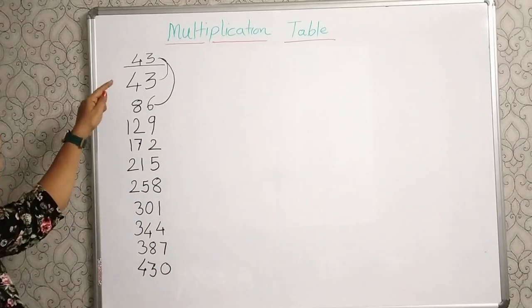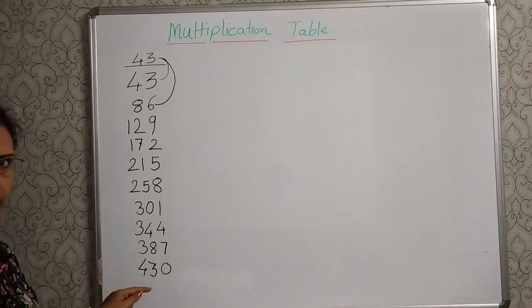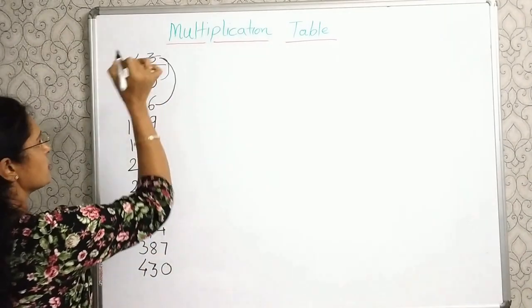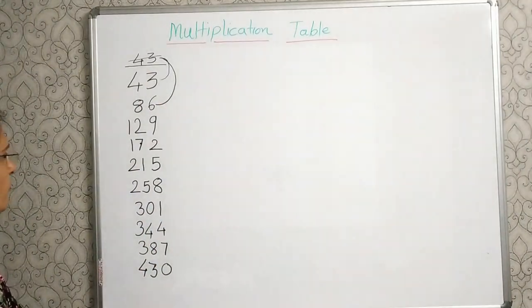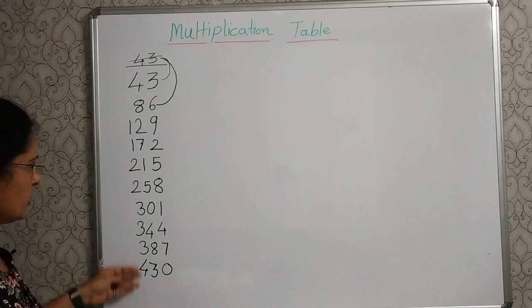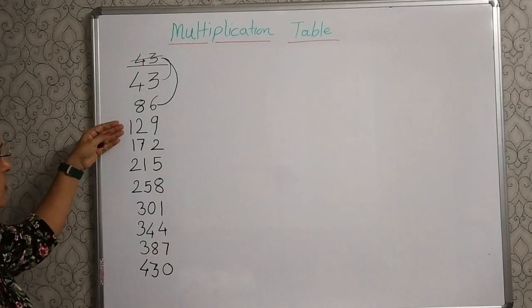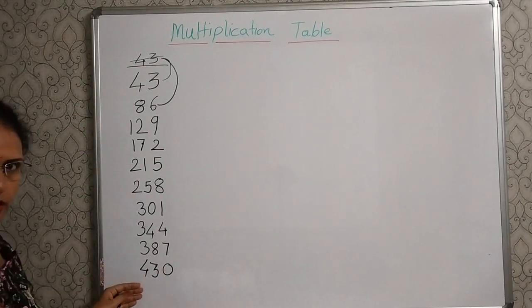And here, your 43's table is completed. After completing this table, you can erase this topmost 43. So, from this 43 till 430, it is your table. 43 ones are 43, 2s are 86, 3s, 4s till tens.